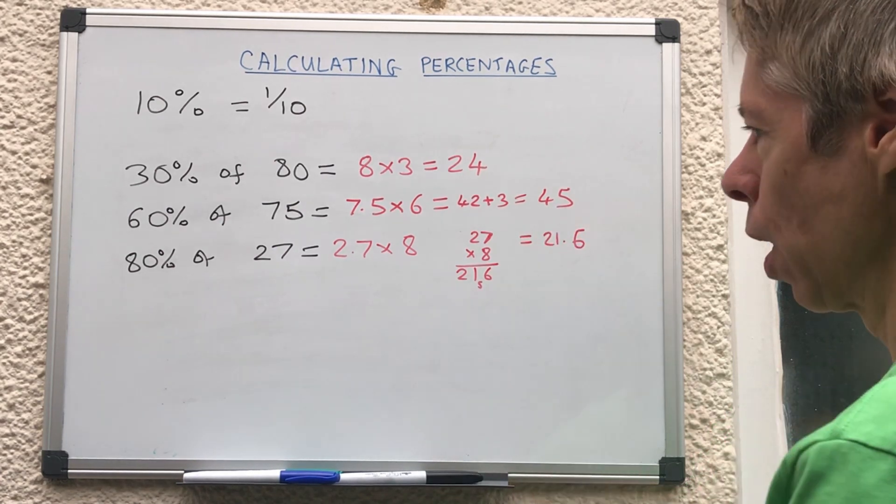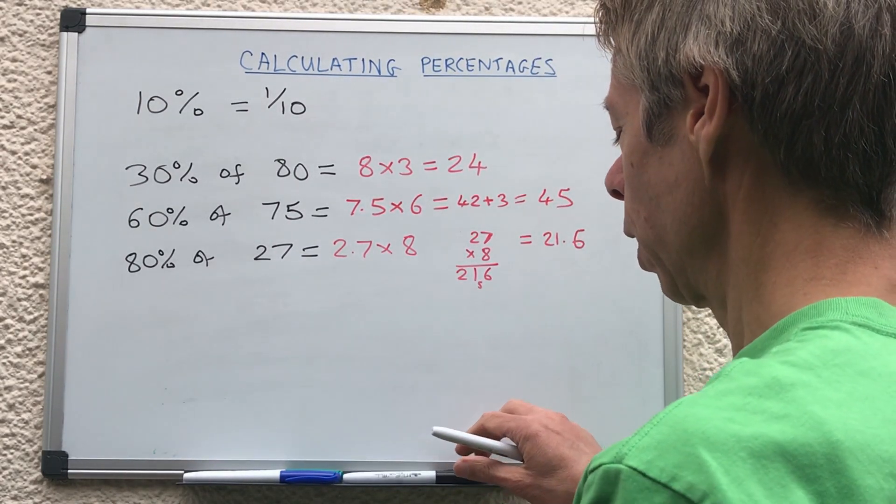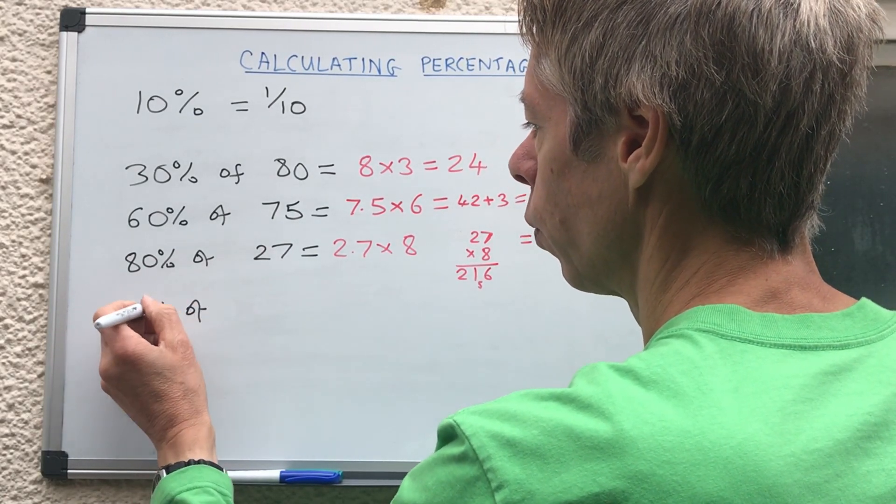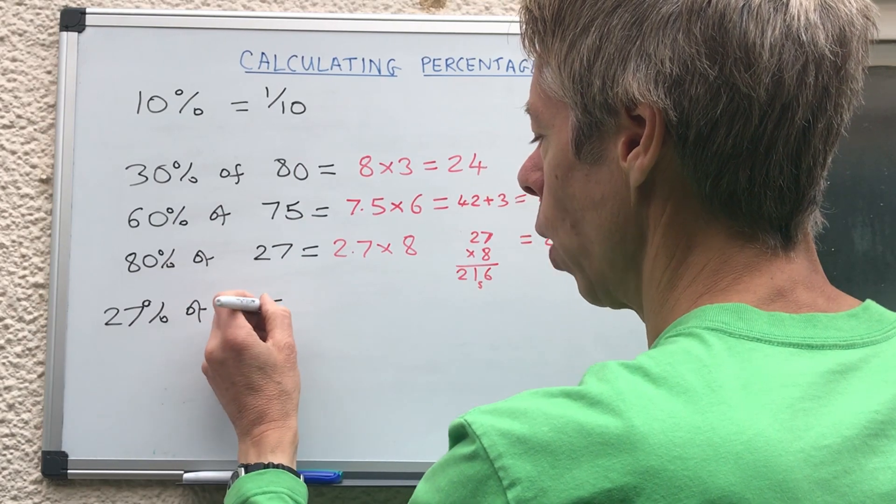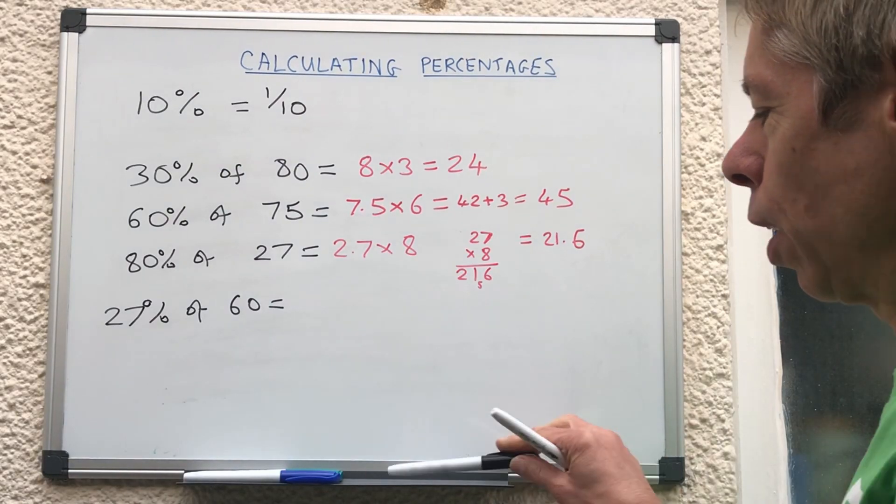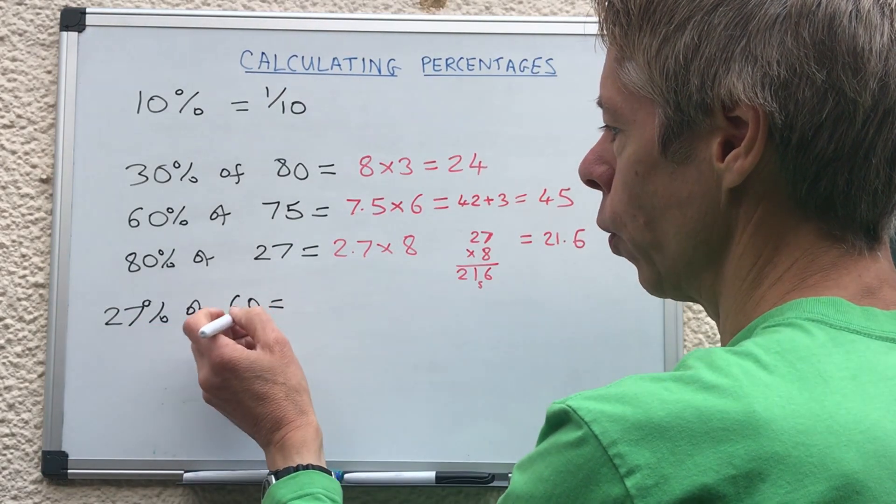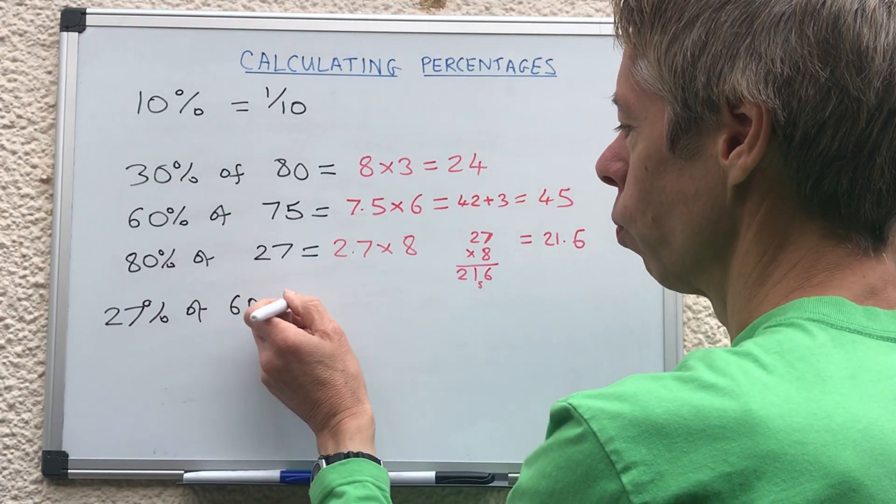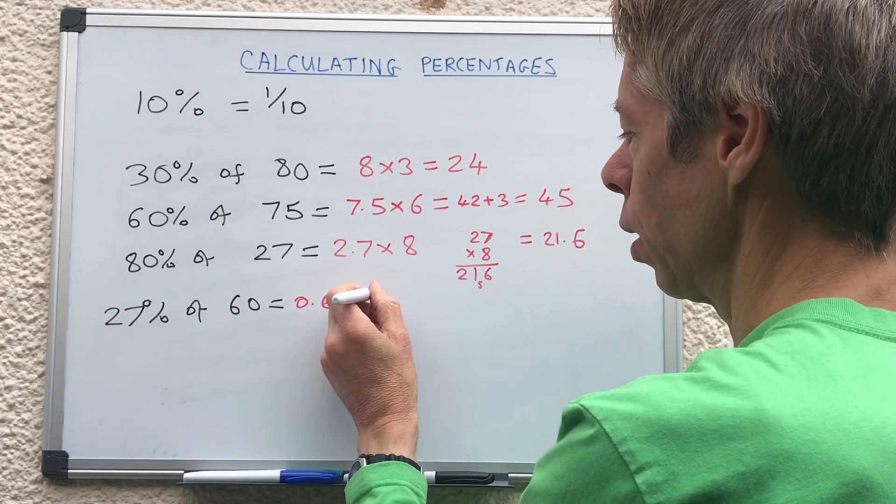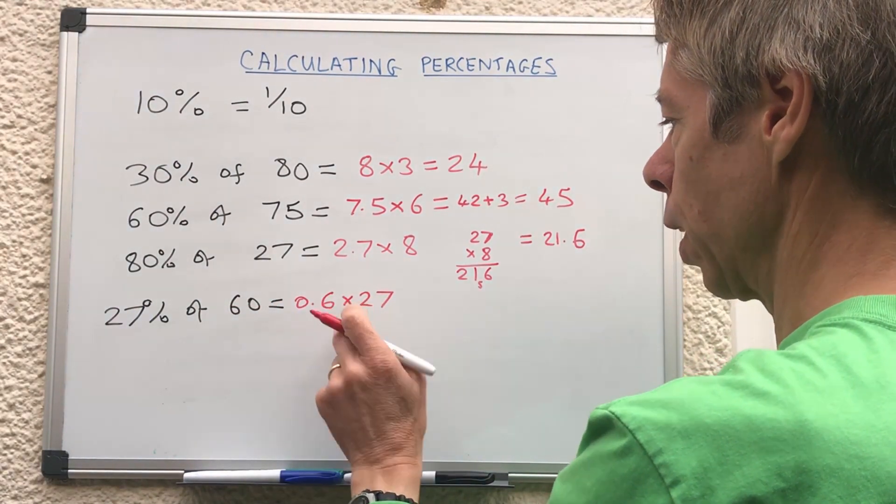Now what if you had to work out something like 27 percent? So 27 percent of 60. Well you can't use the 10% idea, that's just not going to work. So what we do this time is we're going to do 1%, so we're going to divide it by 100, so that would be 0.6, and then we've got to multiply that by 27.